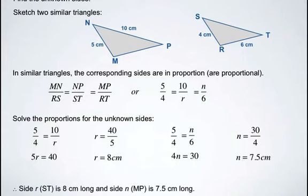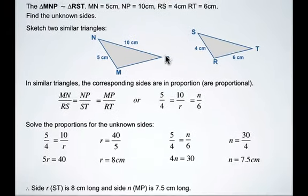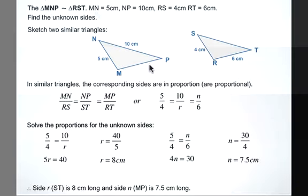Therefore, side r, which is ST in our diagram, is 8 centimeters long. And side n, which is MP in our original diagram, is 7.5 centimeters long because triangle MNP is similar to triangle RST.